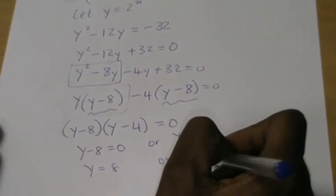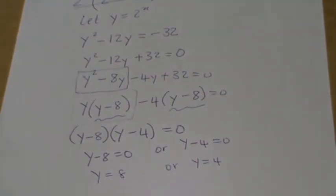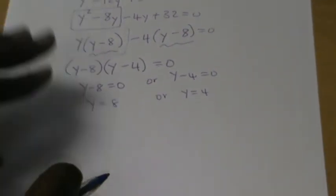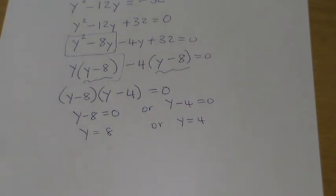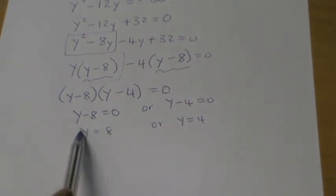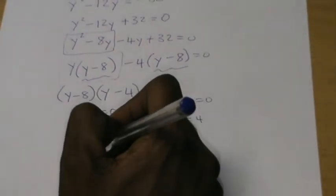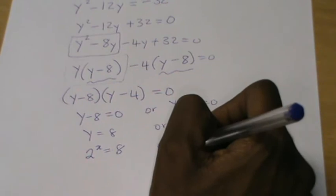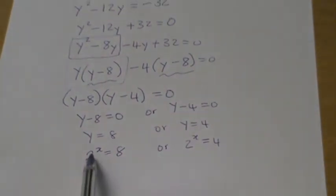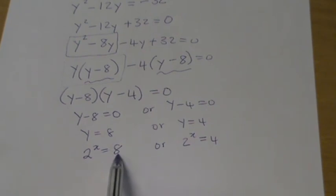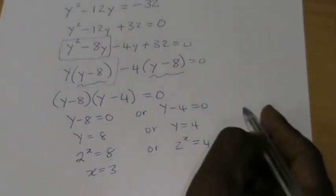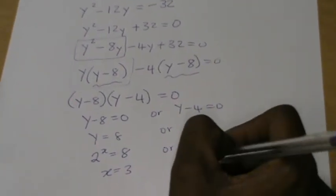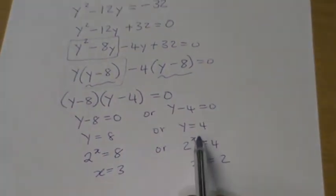Some of you might be tempted to stop here, but remember the question asked us to solve for x — not for y. Y is something you introduced to make solving easier. Remember what y was: y equals 2 to the power of x. So 2 to the power of x equals 8, or 2 to the power of x equals 4. In the first case x equals 3, and in the second case, since 2 squared equals 4, x equals 2.